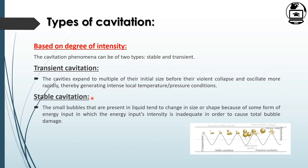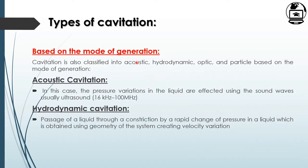In stable cavitation, the bubble size is small. Small bubbles present in liquid tend to change in size or shape because of some form of energy input, but this energy input intensity is inadequate to cause total bubble collapse. A diagrammatic representation shows stable cavitation with smaller cavities, while transient cavitation also features smaller cavities but with violent collapse.